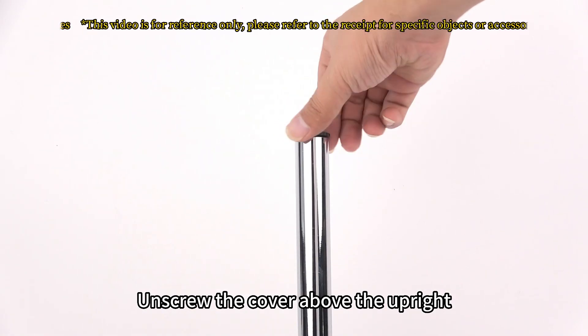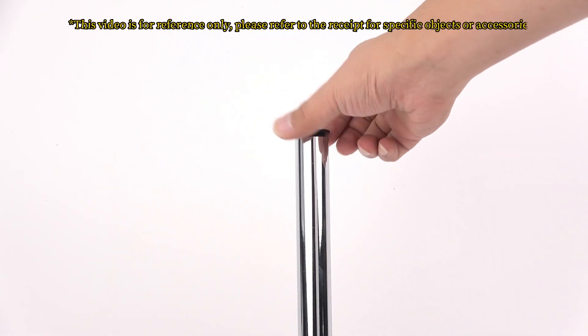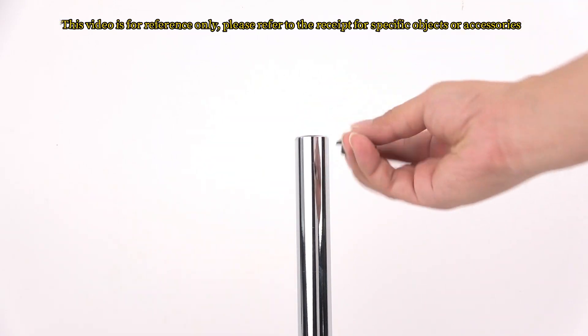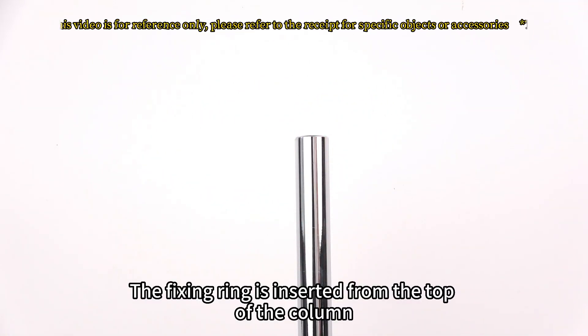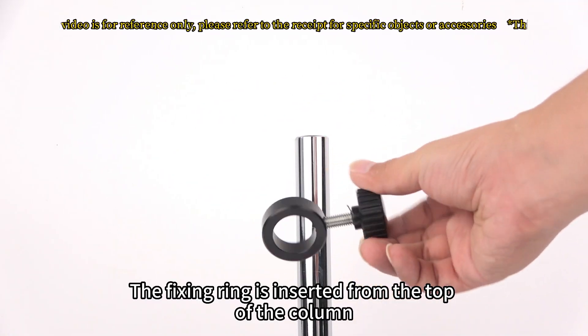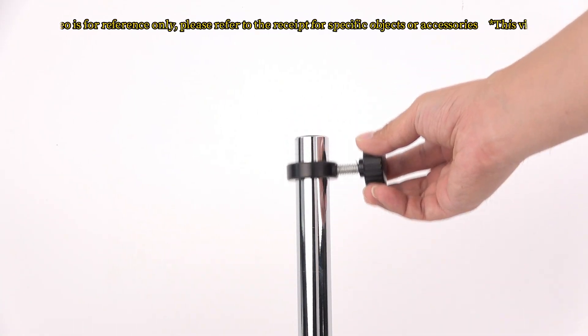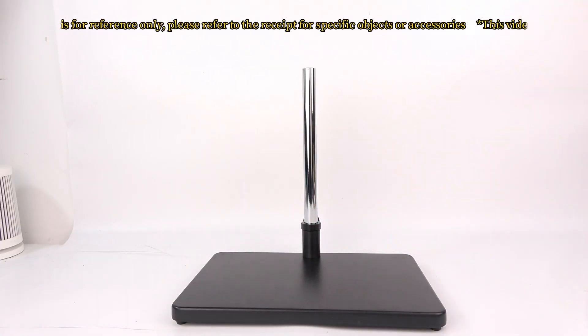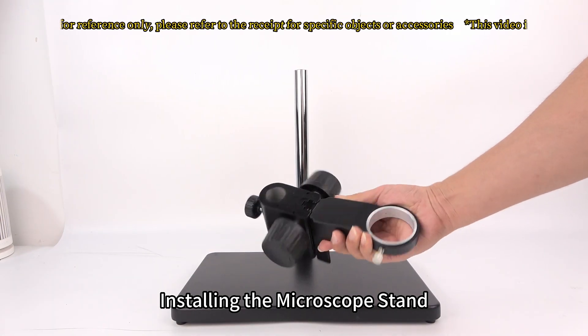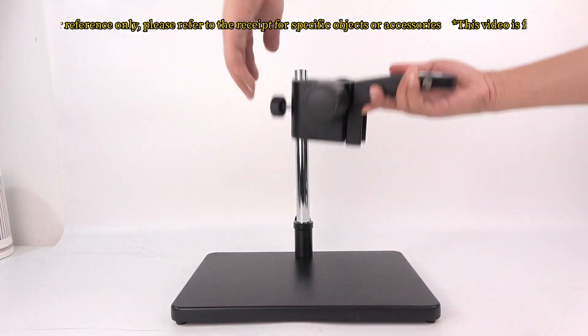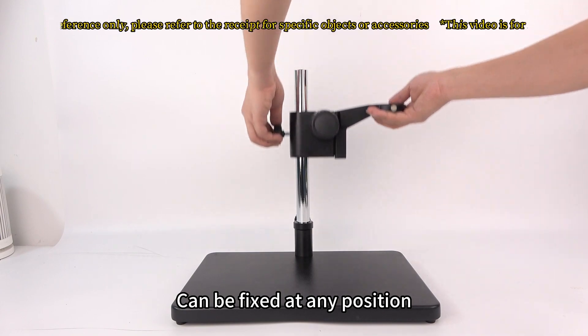Unscrew the cover above the upright. The fixing ring is inserted from the top of the column. Installing the microscope stand. Can be fixed at any position.